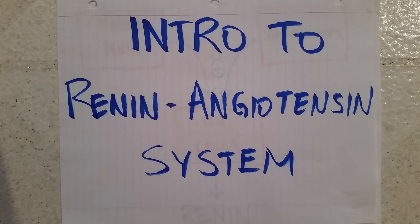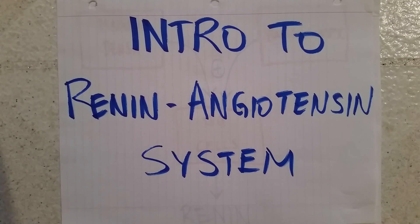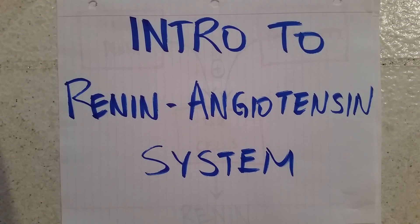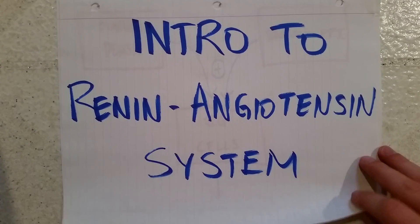This video is an introduction to the renin-angiotensin system. I'm only going to focus on what you need to know for board examination or other testing purposes — not all the nitpicky small details. The primary take-home message is that the renin-angiotensin system is one of the main mechanisms by which the human body regulates blood pressure, and this system acts to raise that blood pressure.